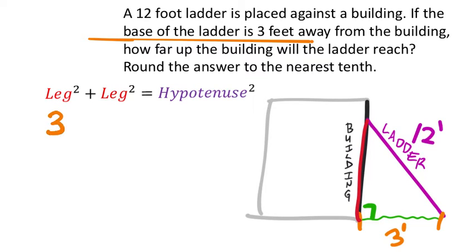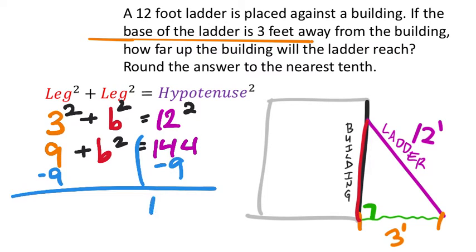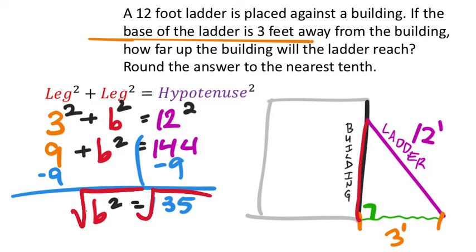We have one leg of 3, an unknown leg B, and hypotenuse of 12. So: 3 squared plus B squared equals 12 squared. That's 9 plus B squared equals 144. Subtracting 9 from both sides gives B squared equals 135. Square rooting both sides: the square root of 135 gives 3√15, and using the calculator to get the decimal — rounded to the nearest tenth, B is approximately 11.6 feet.